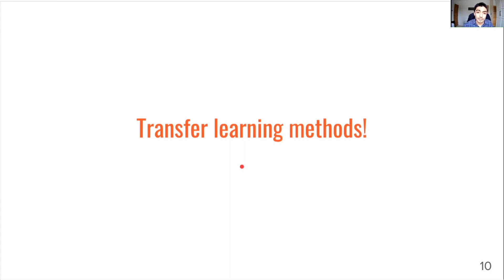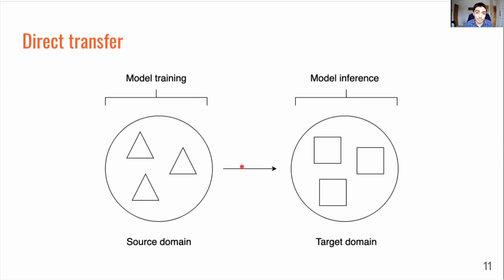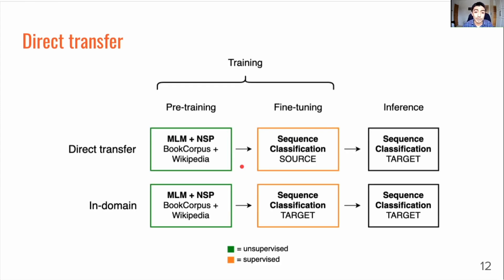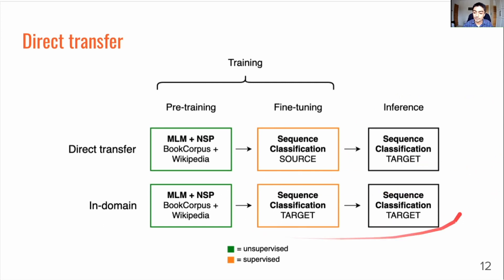First we explored direct transfer, which is the simplest form of transfer learning. In this situation a model is simply trained on data from the source domain, then tested on target domain data and that is it. Applying this concept to BERT models, we keep the pre-training stage unchanged by convention. In this diagram we're comparing a direct transfer BERT model from a source domain to a target domain versus a standard in-domain classifier for the target domain, which involves no transfer learning at all. In the direct transfer case we fine-tune on the source domain before testing on the target domain, whereas with the in-domain classifier fine-tuning and inference both occur on the target domain.